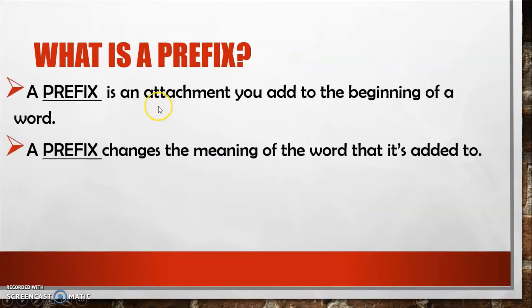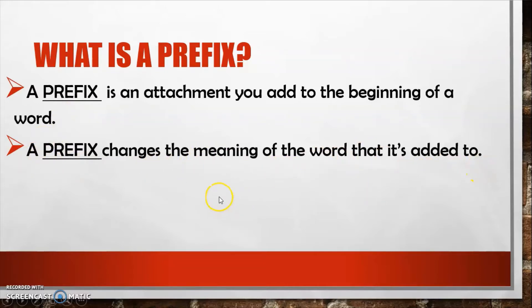So let's do this. What is a prefix? A prefix is an attachment you add to the beginning of a word — it's something we attach at the beginning of words. A prefix changes the meaning of the word that it's added to. Let's look at some examples.